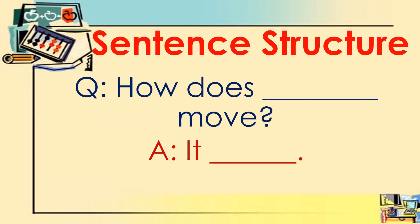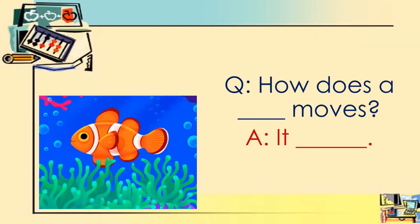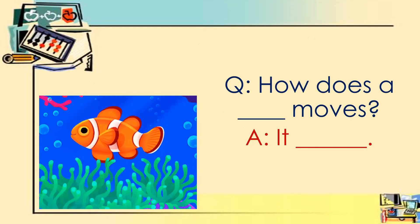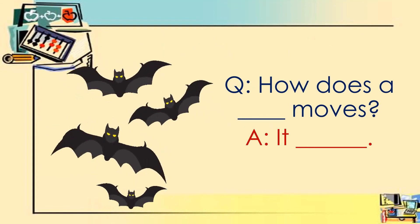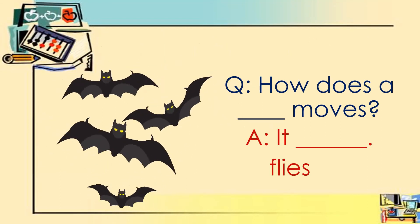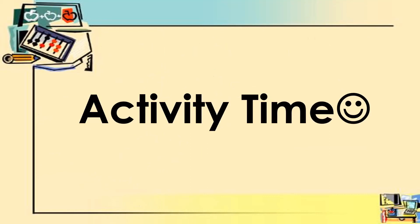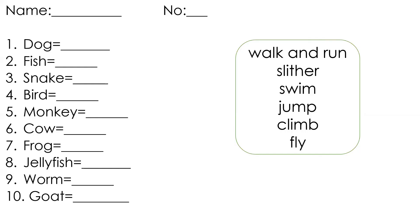I have a question. How does blank move? Your answer is blank. For example, how does a fish move? It swims. Very good. How does a bat move? It flies. Very good. Now it's your activity time. I want you to answer this on your notebook. For example, number one: what is the movement of a dog? Dog walks and runs. Write your answer on the blank. Do you understand? That's all for today. Thank you and goodbye.